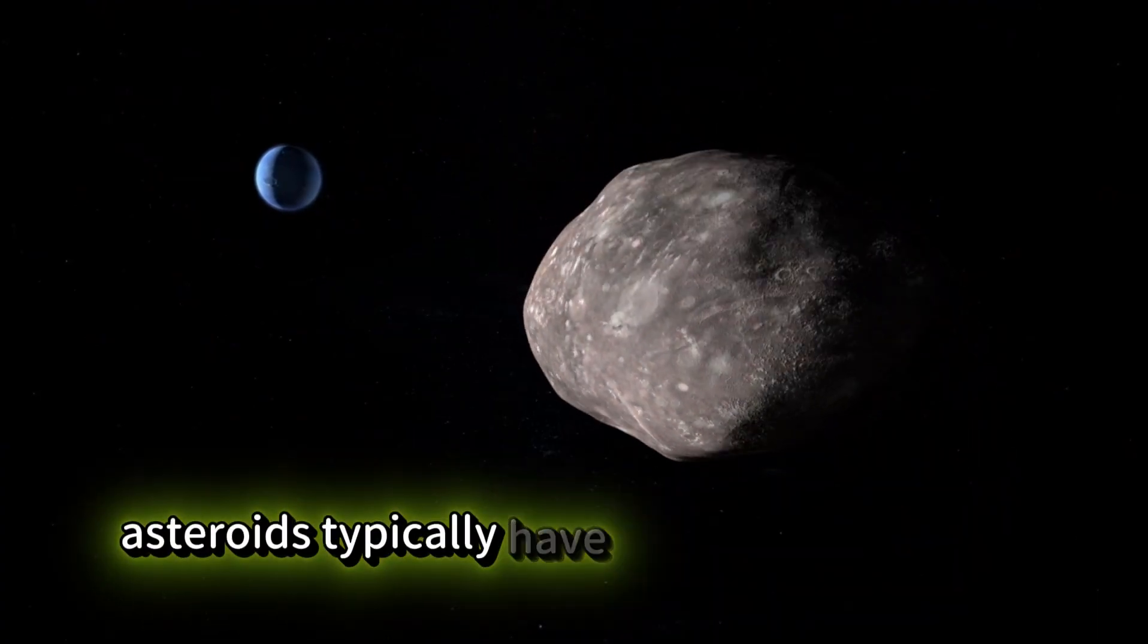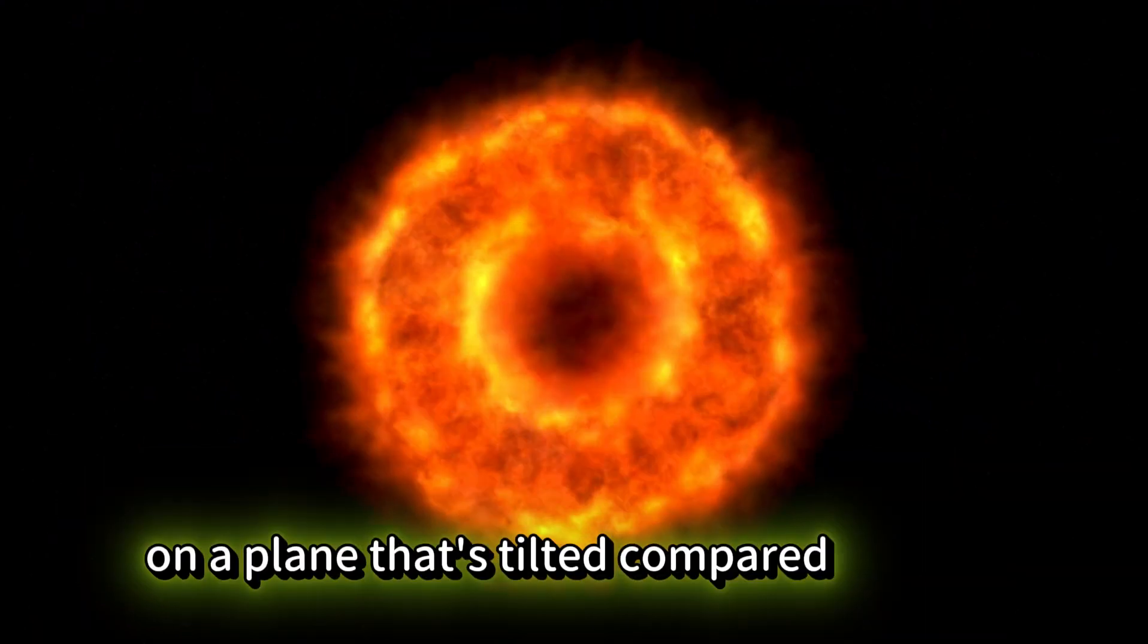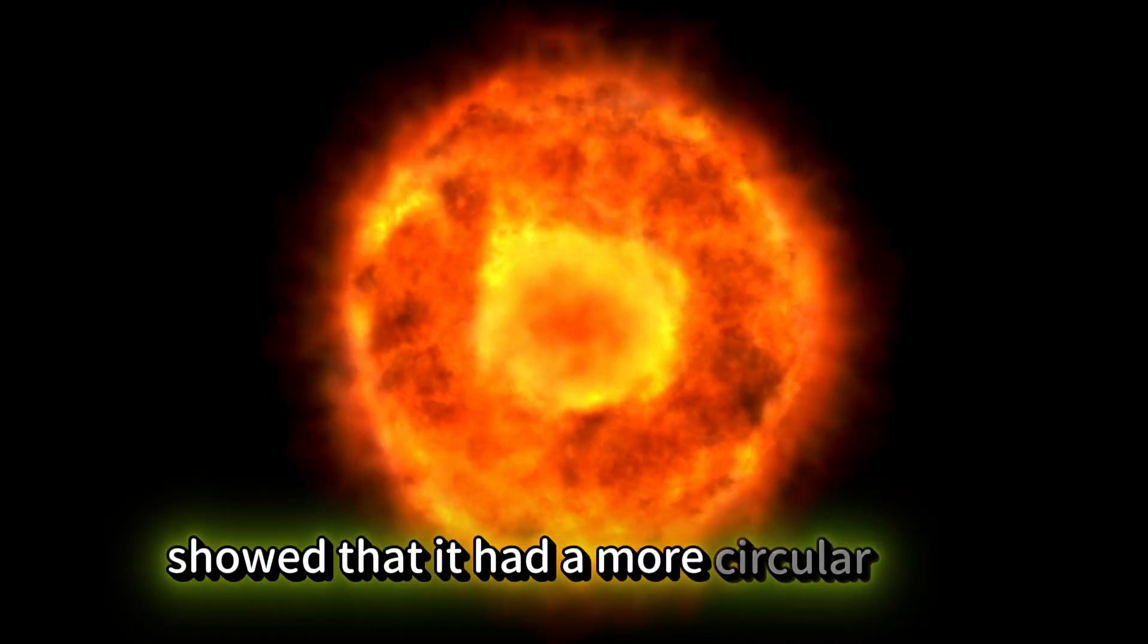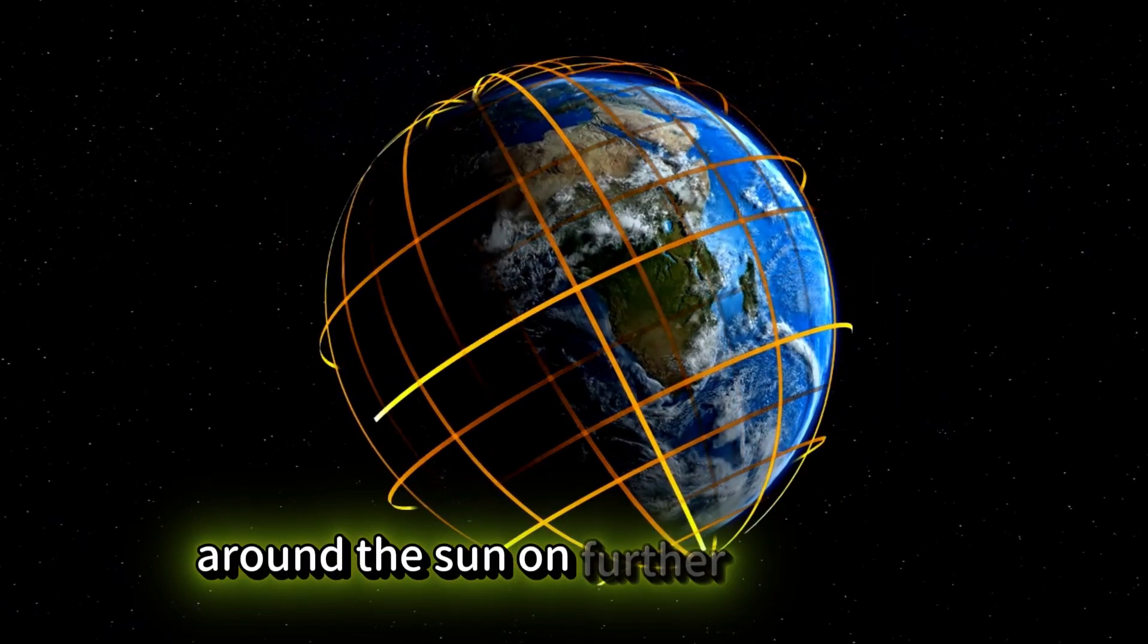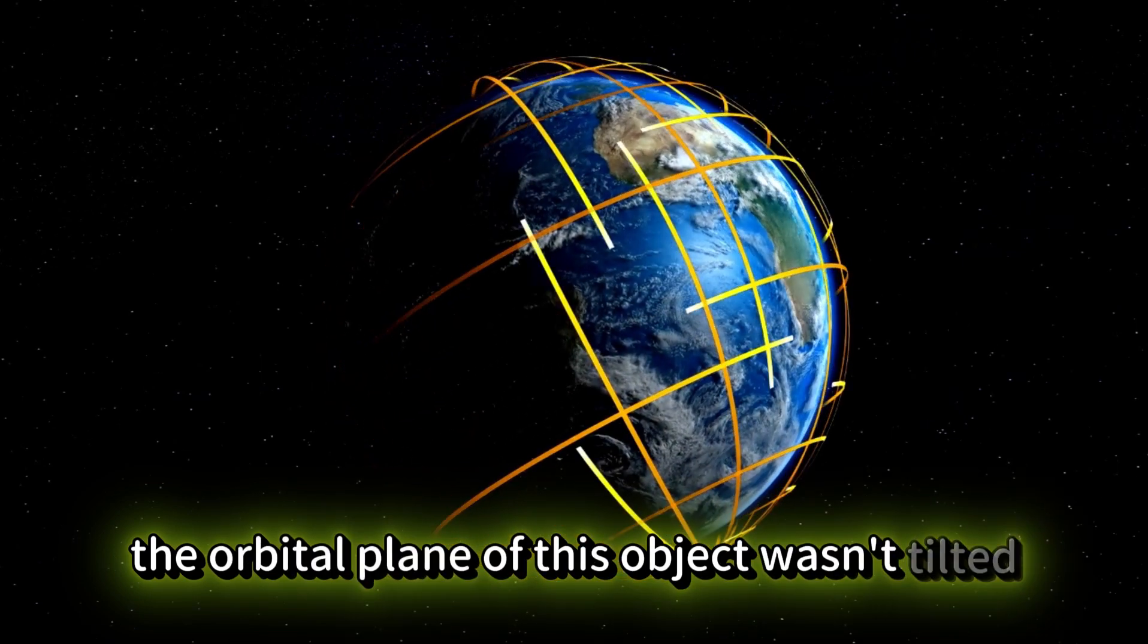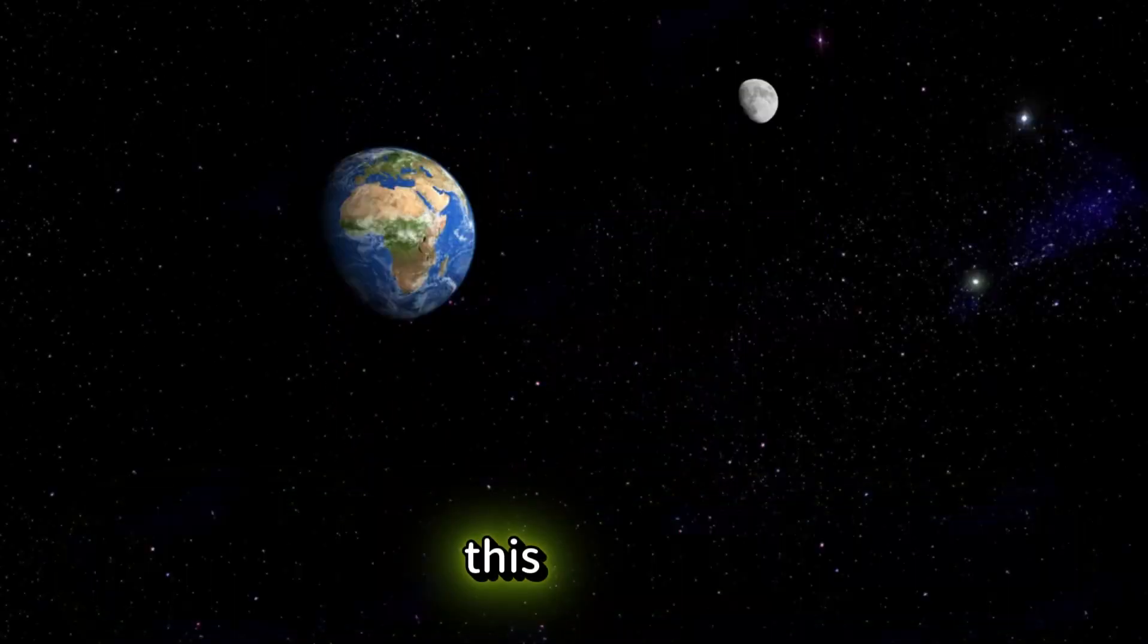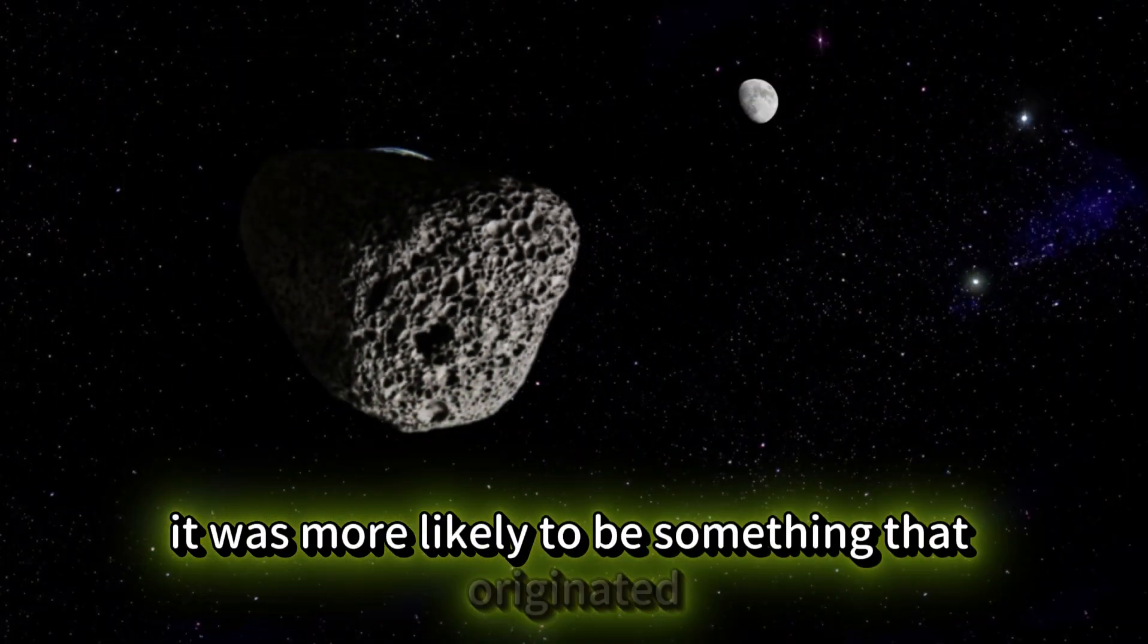Asteroids typically have a more oval-shaped orbit, on a plane that's tilted compared to Earth. Initial calculations of this object showed that it had a more circular orbit around the Sun. On further inspection, the orbital plane of this object wasn't tilted, but in fact, perfectly matched the orbital plane of Earth. This meant it was more likely to be something that originated from Earth.